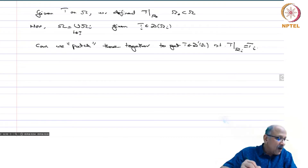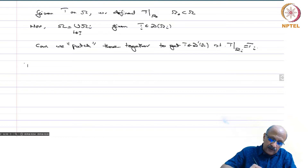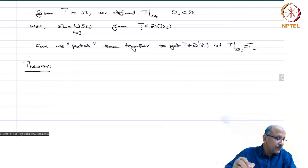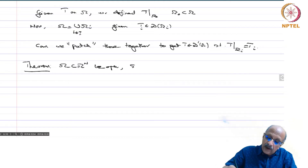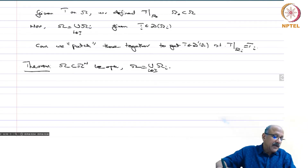So you want to stitch all those things together. We have the following theorem for that — under what condition can we do this? Let omega_i in R^n be open and omega equals union over i in I of omega_i.